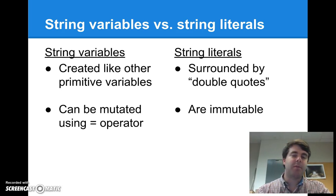Now on the other hand, let's take a look at string variables. String variables, just like number variables, are created by specifying their type and their name. They can be mutated using the assignment operator. And we'll see some examples of those a little bit later.